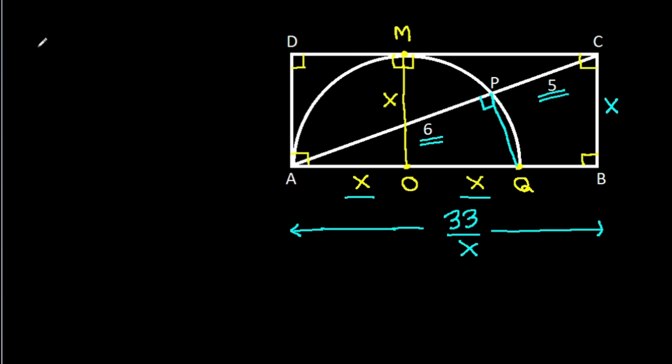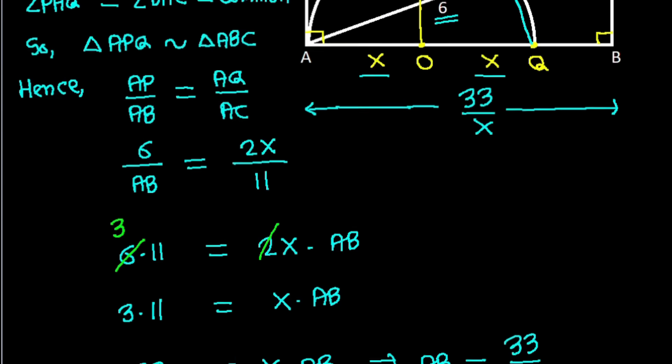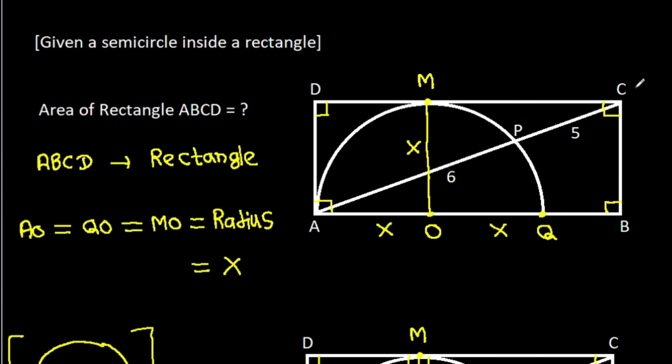And area of ABCD will be AB times BC. AB is 33 over X times BC, which is X. And X will get cancelled. So it is 33.